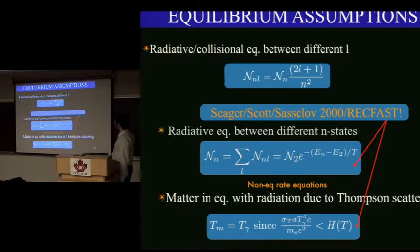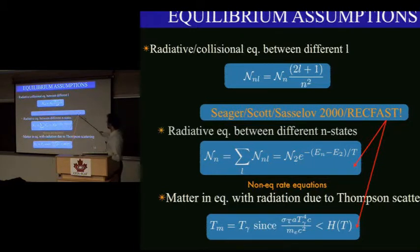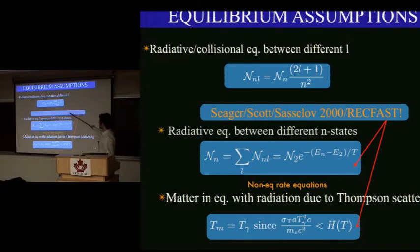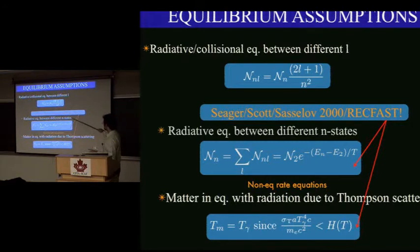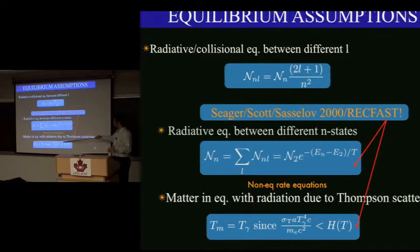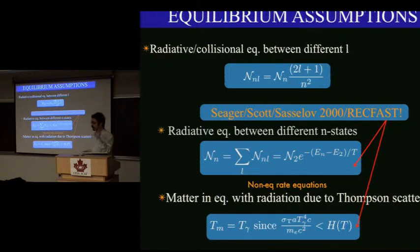The first refinement was Seeger, Scott, and Sassalov, who did a multi-level atom calculation in 2000. Then there's the RecFast code, which takes the Peebles calculation and corrects it with a fudge factor to reproduce this. This is what sits inside CMBFAST — any time you see the beautiful line going through all the WMAP points, this is the code that was run. In that calculation they broke the assumptions of radiative equilibrium between different n states and perfect equilibrium between matter and radiation.